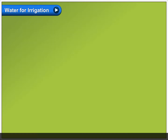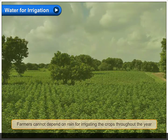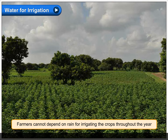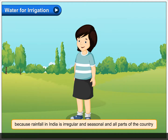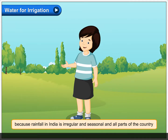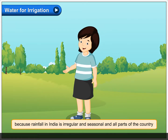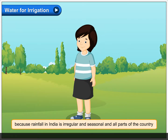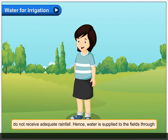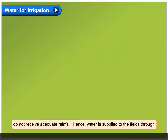Water for irrigation. Farmers cannot depend on rain for irrigating the crops throughout the year because rainfall in India is irregular and seasonal, and all parts of the country do not receive adequate rainfall.